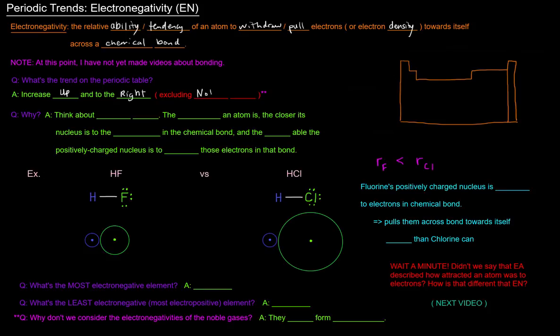And this excludes the noble gases. Why don't we consider the electronegativity of the noble gases? The reason why is because they don't really form compounds. I've seen xenon form compounds, but it doesn't form very many. The point is that especially the smaller ones like helium, neon, and argon, I've never seen them form compounds. So they're not going to bond to another atom. So if they can't bond to another atom, they have no relative ability to withdraw or pull electrons towards themselves.